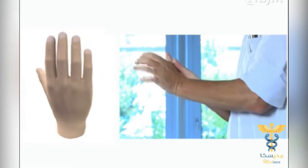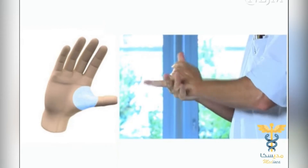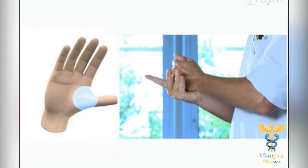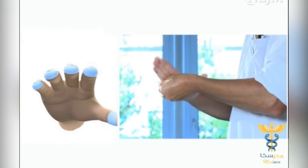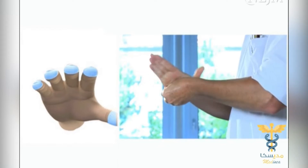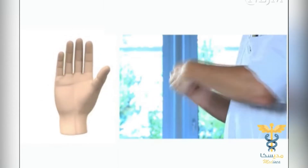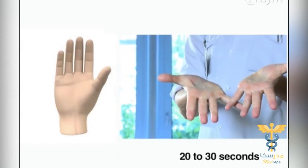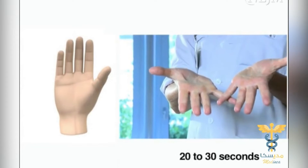To cleanse the base of the thumb, clasp it in the palm of your other hand and rotate your thumb. Finally, decontaminate the tip of your fingers and the sub-ungual region by rotating them on the palm of the other hand. Once dry, your hands are safe and you are ready to work. The entire procedure should take 20 to 30 seconds.